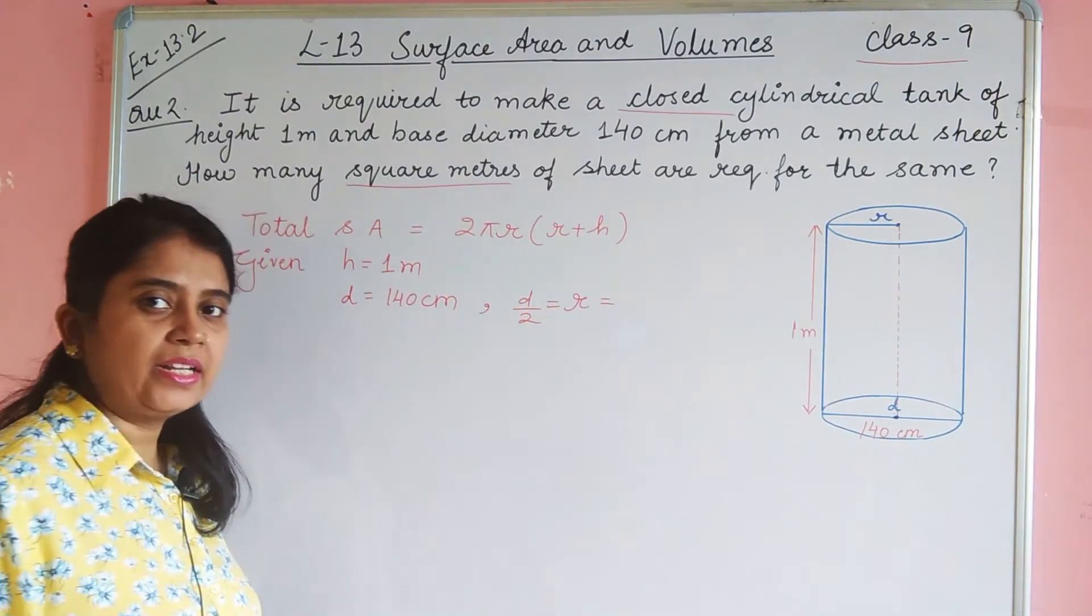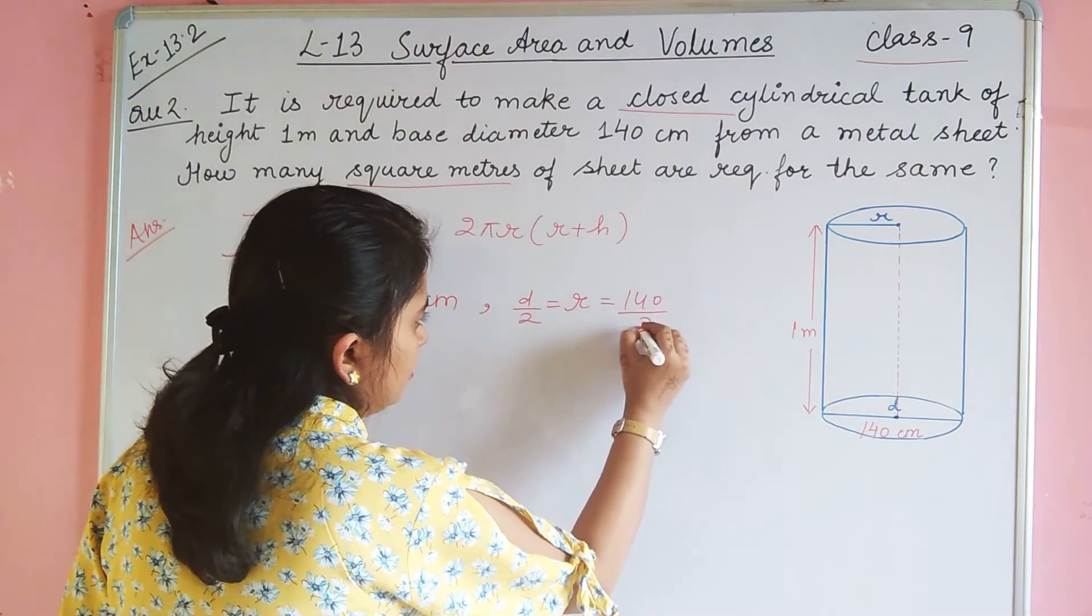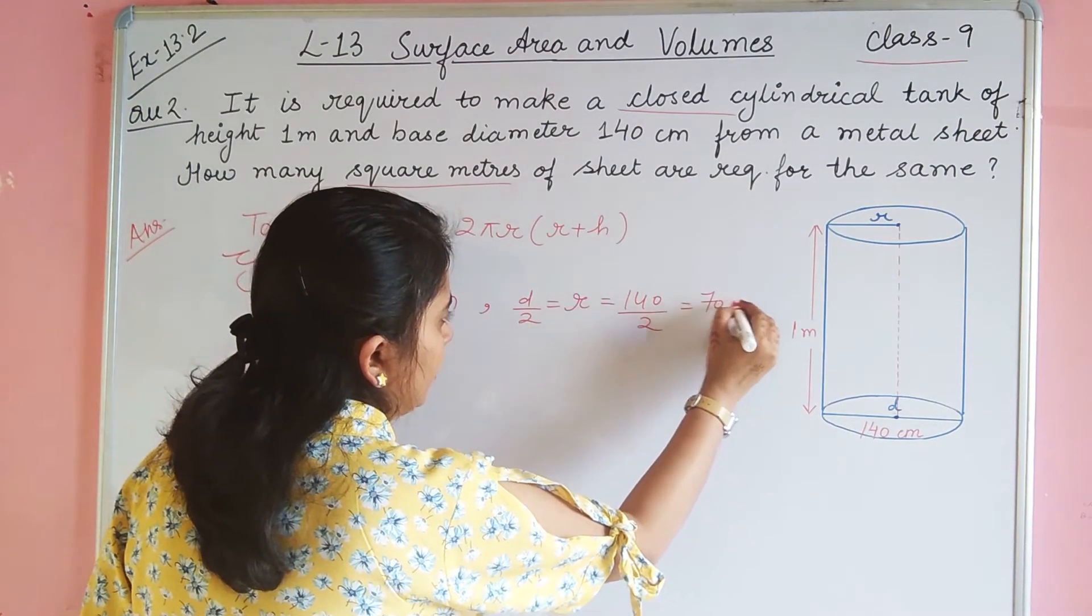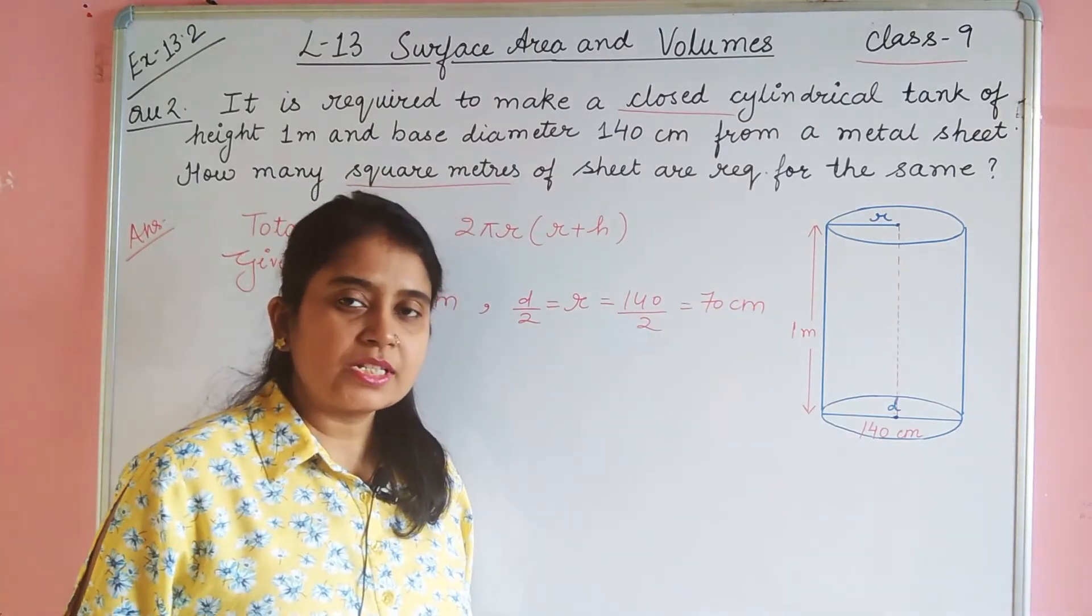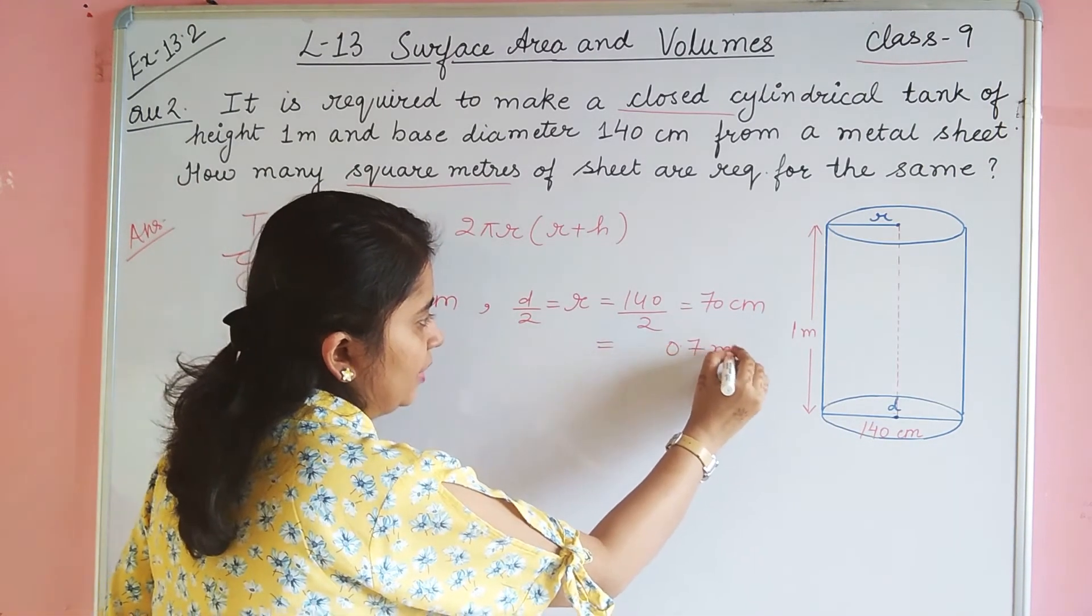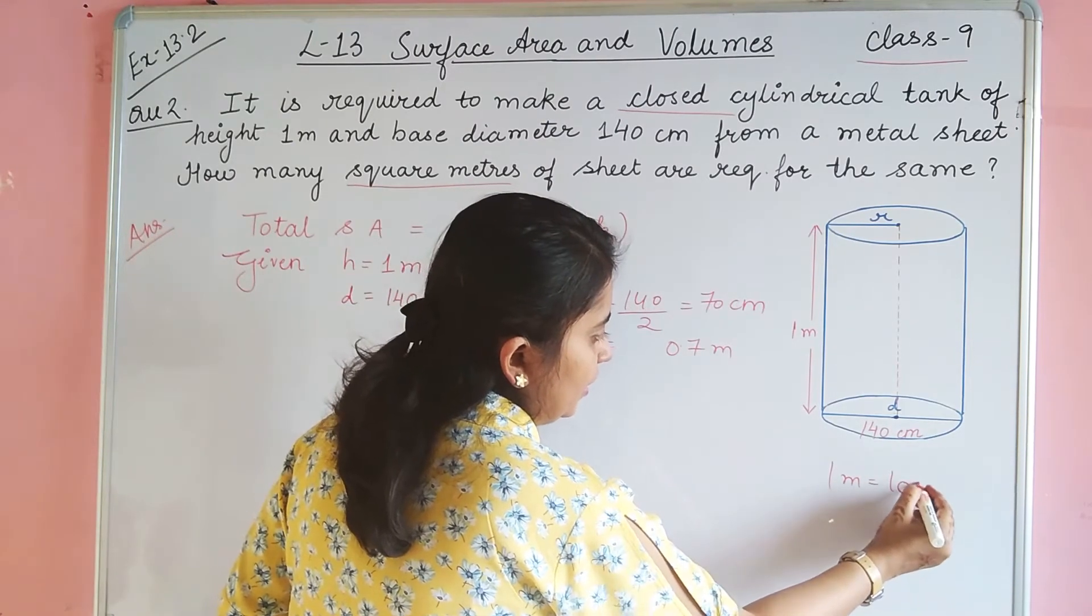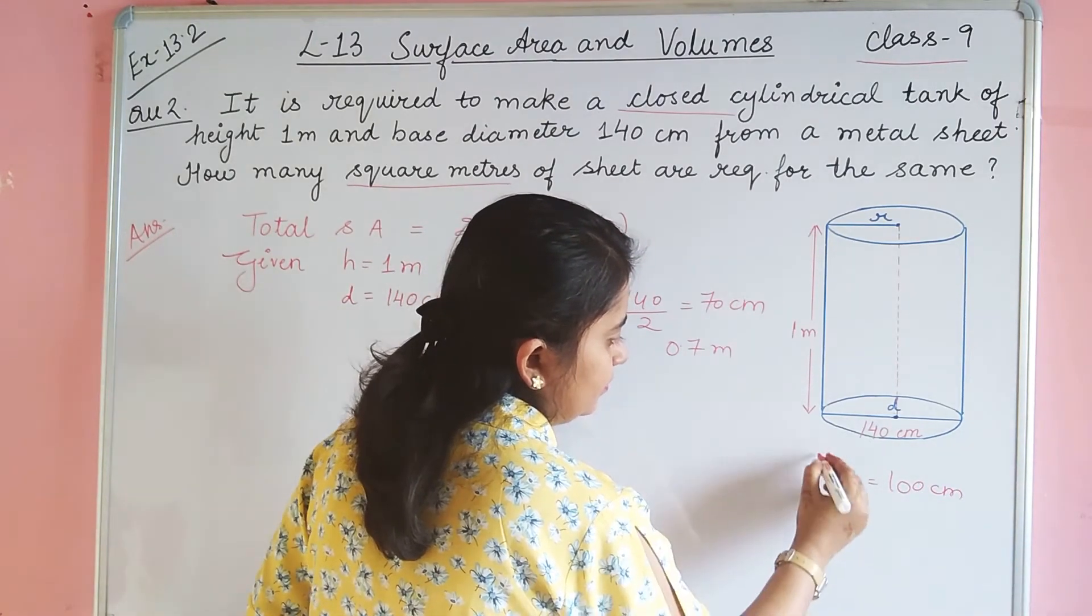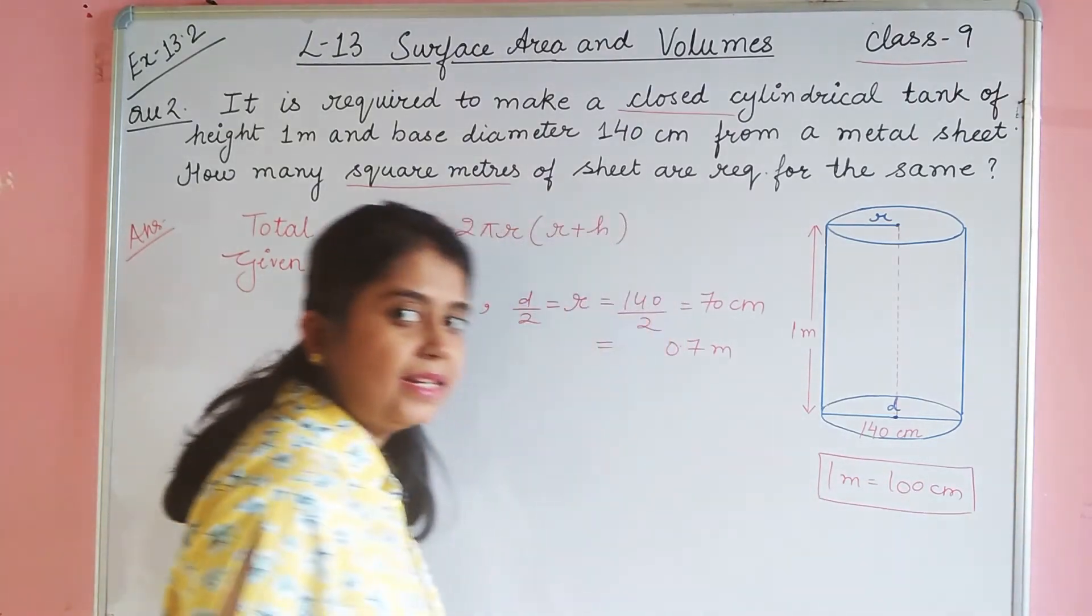When we divide the diameter, the radius is 70 cm. But because this unit is cm and we will convert it, so this unit will be 0.7 m, because 1 m is equal to 100 cm. This relation is the result.